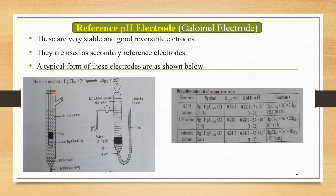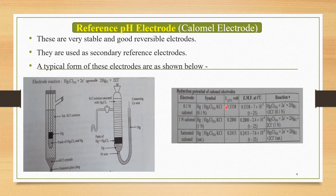As far as the electrode reaction of this electrode is concerned, it is: Hg2Cl2 (solid) + 2e⁻ → 2Hg (liquid) + 2Cl⁻. This is the electrode reaction for the calomel electrode, and it is specifically called a reduction reaction. We are therefore interested to know the reduction potential of these electrodes.